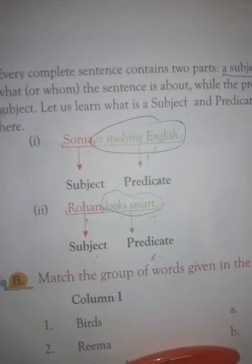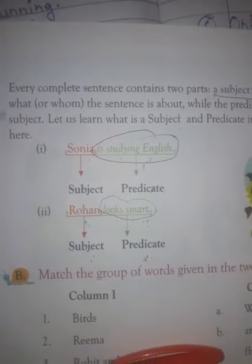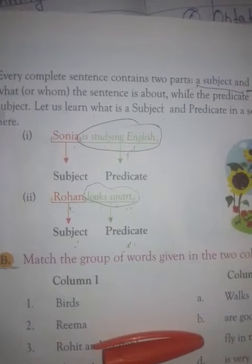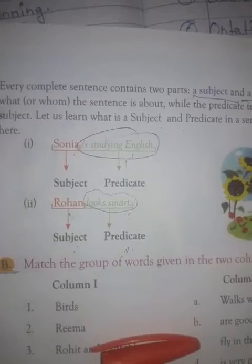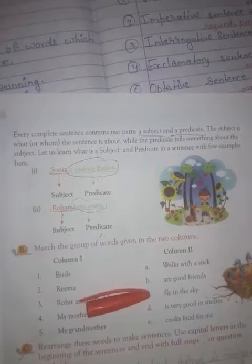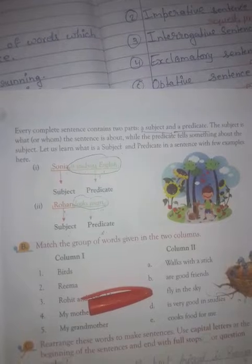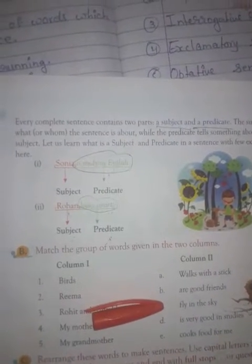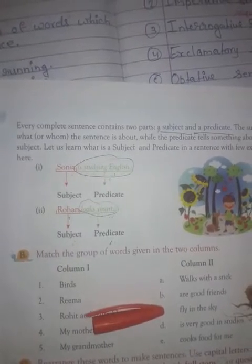Now we are going to read about the different parts of a sentence. A sentence is a group of words that makes complete sense. A sentence begins with a capital letter and ends with an end mark. Every complete sentence contains two parts: a subject and a predicate. The subject is what or whom the sentence is about, while the predicate tells something about the subject.